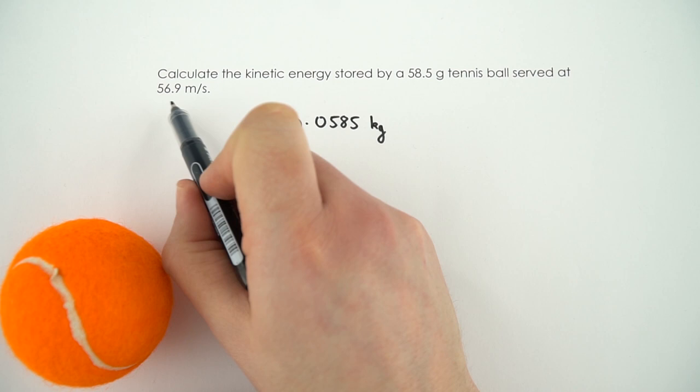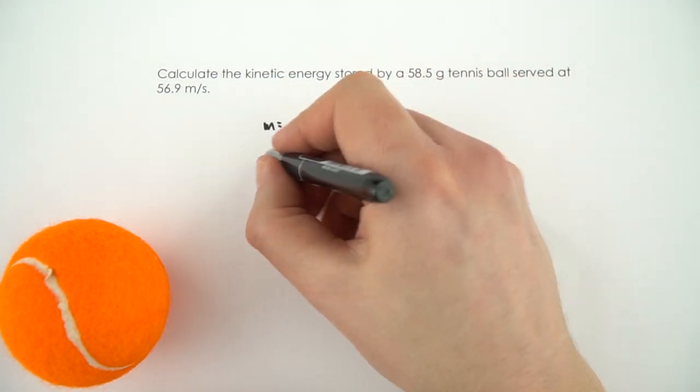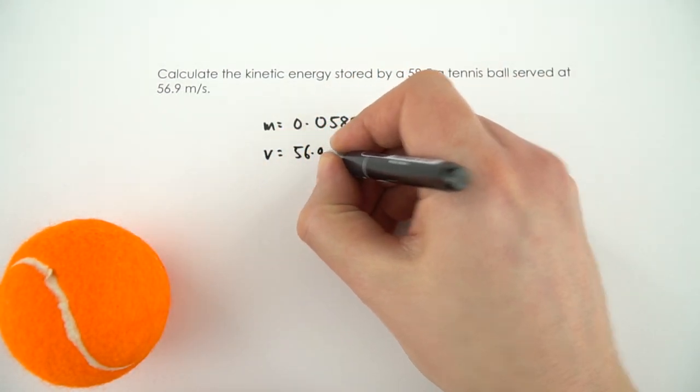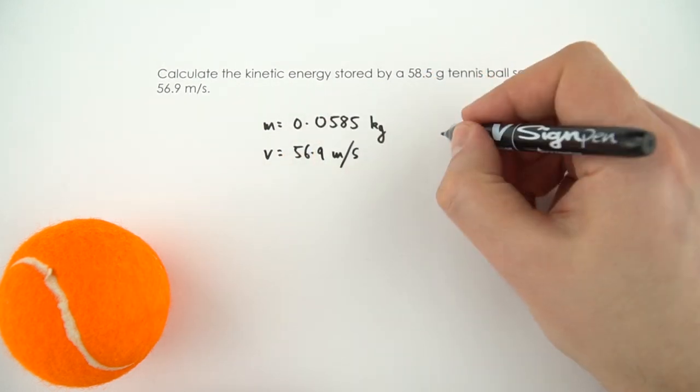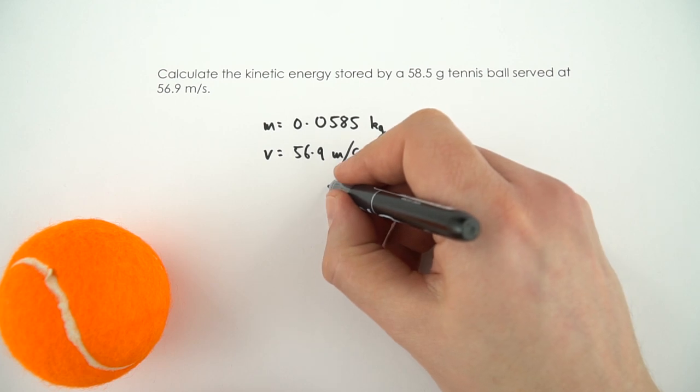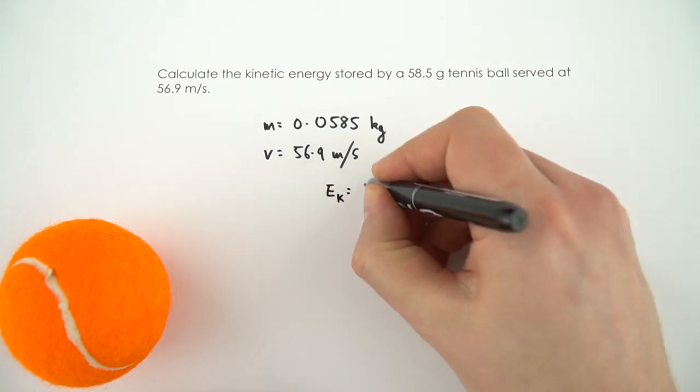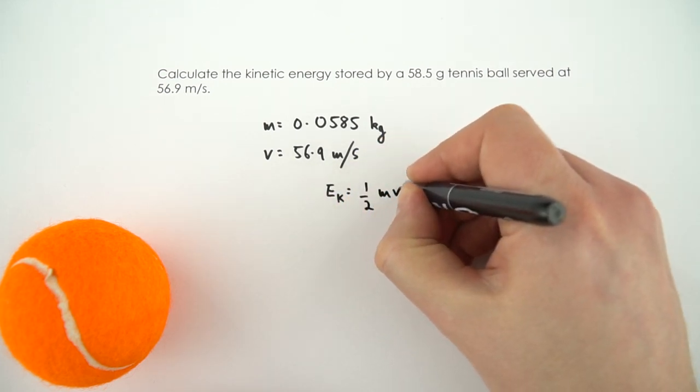We've got the velocity or the speed as 56.9 meters per second, and we need to calculate the kinetic energy. So the first thing I'm going to do is write down the equation that Ek is equal to a half mv squared.